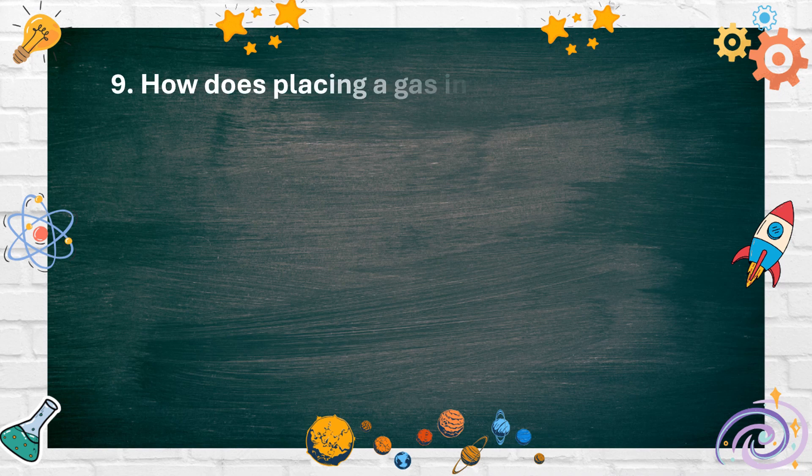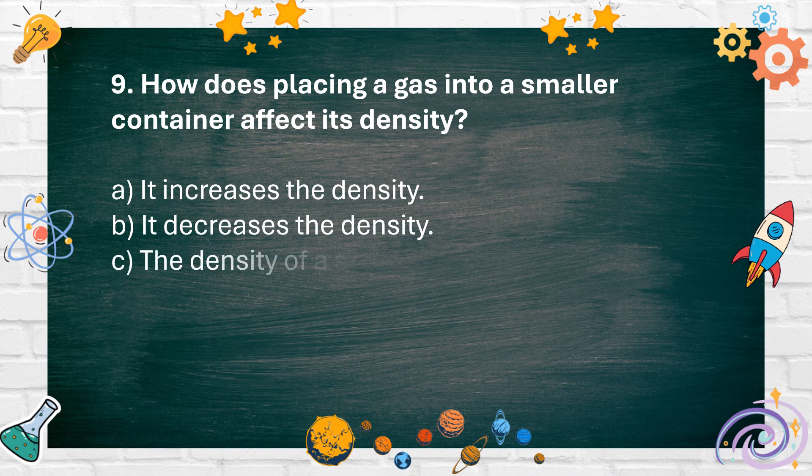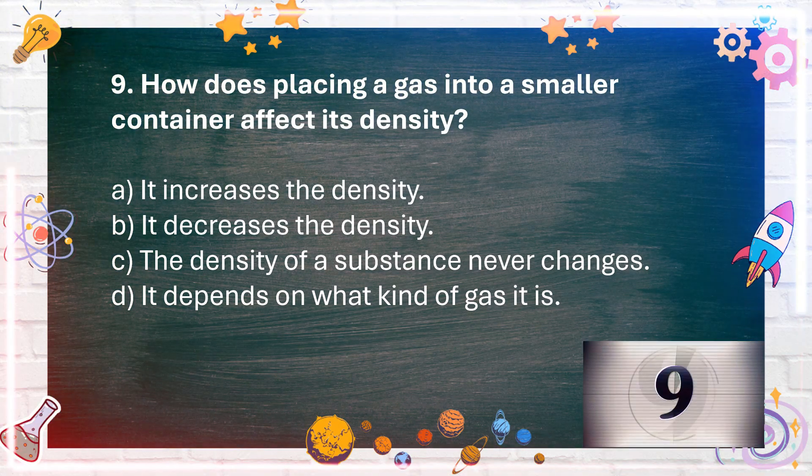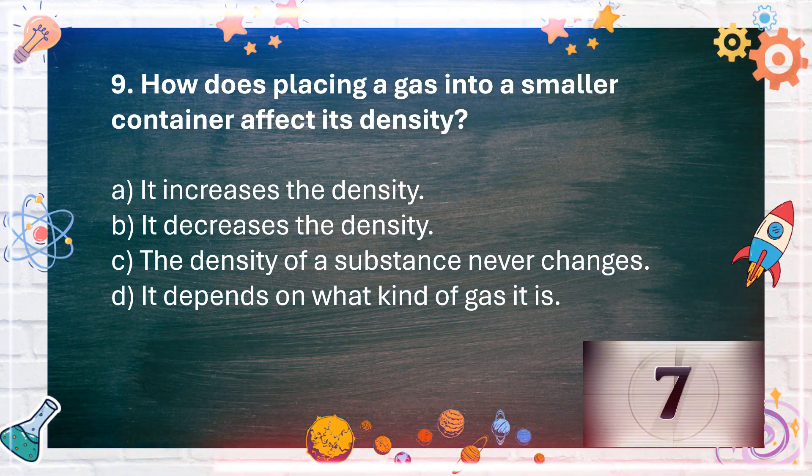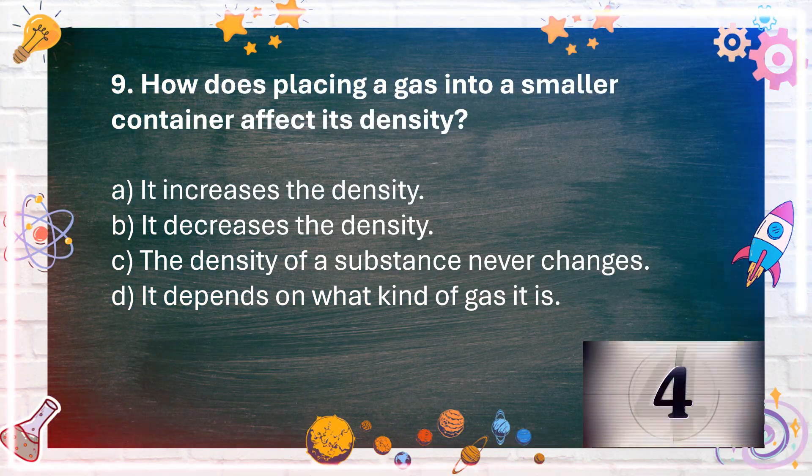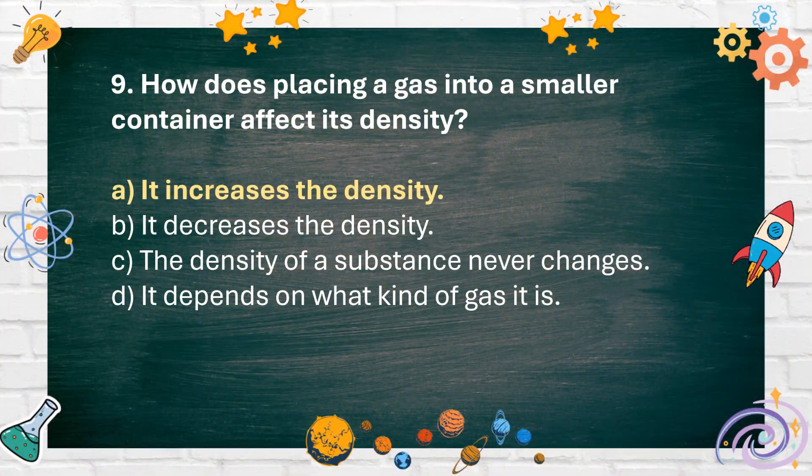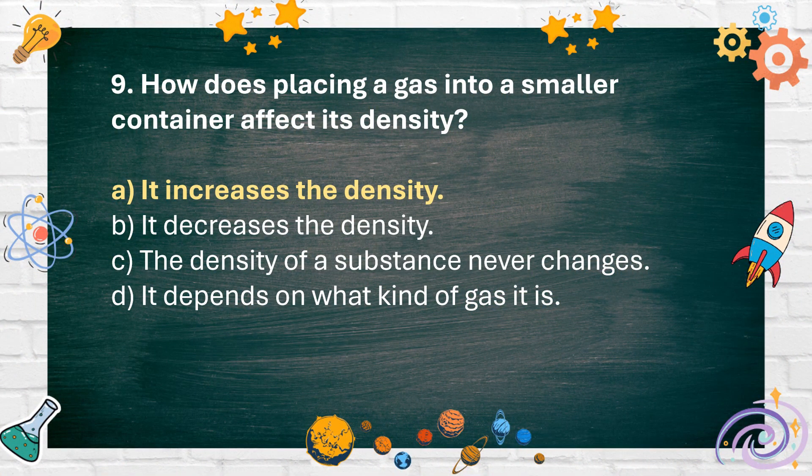Number 9. How does placing a gas into a smaller container affect its density? A. It increases the density B. It decreases the density C. The density of a substance never changes D. It depends on what kind of gas it is. The answer is A. It increases the density.